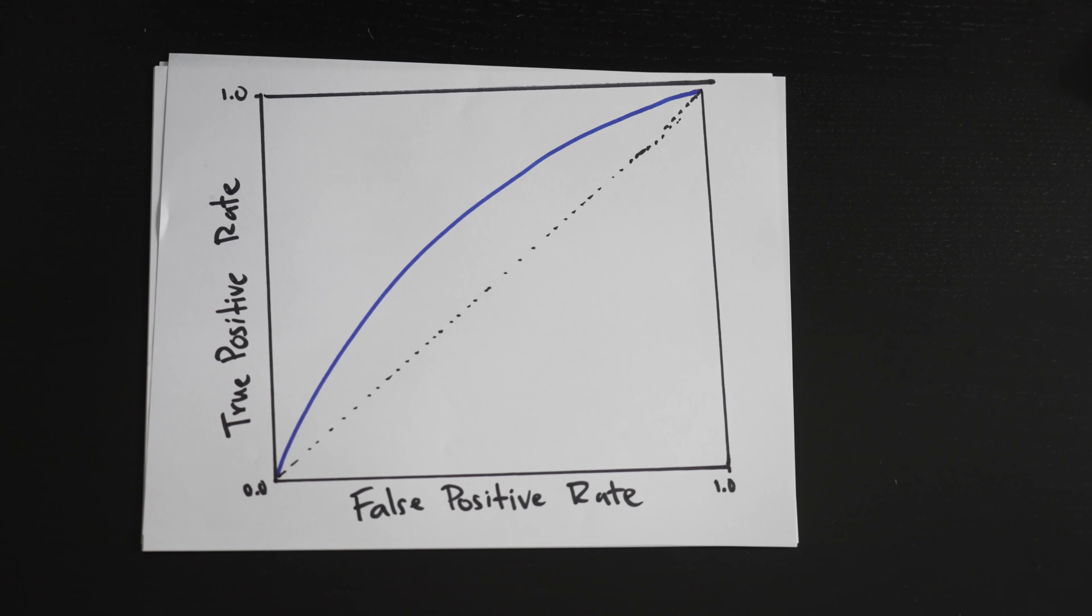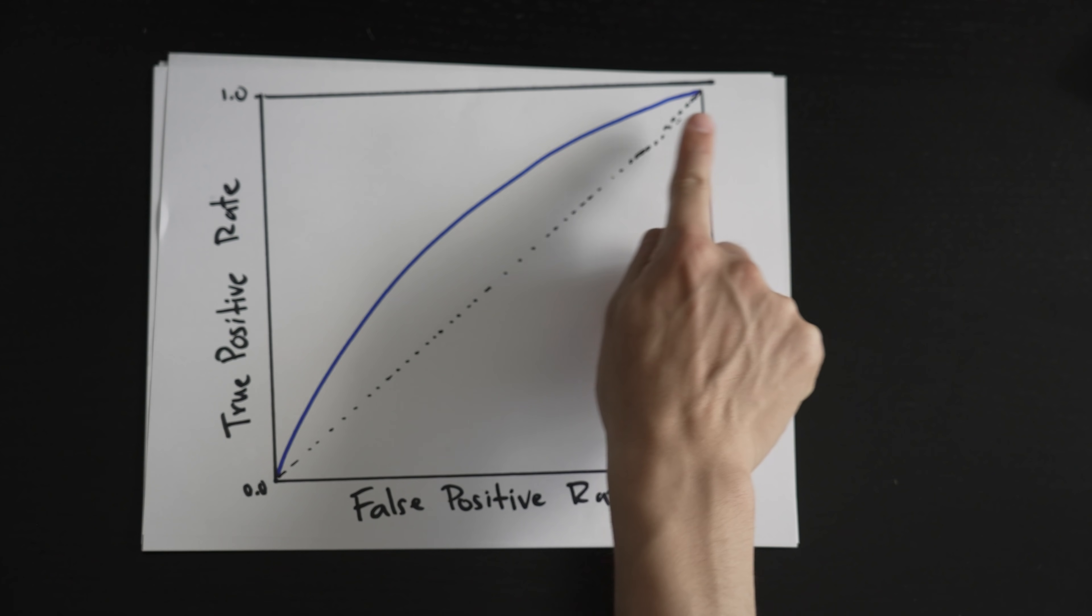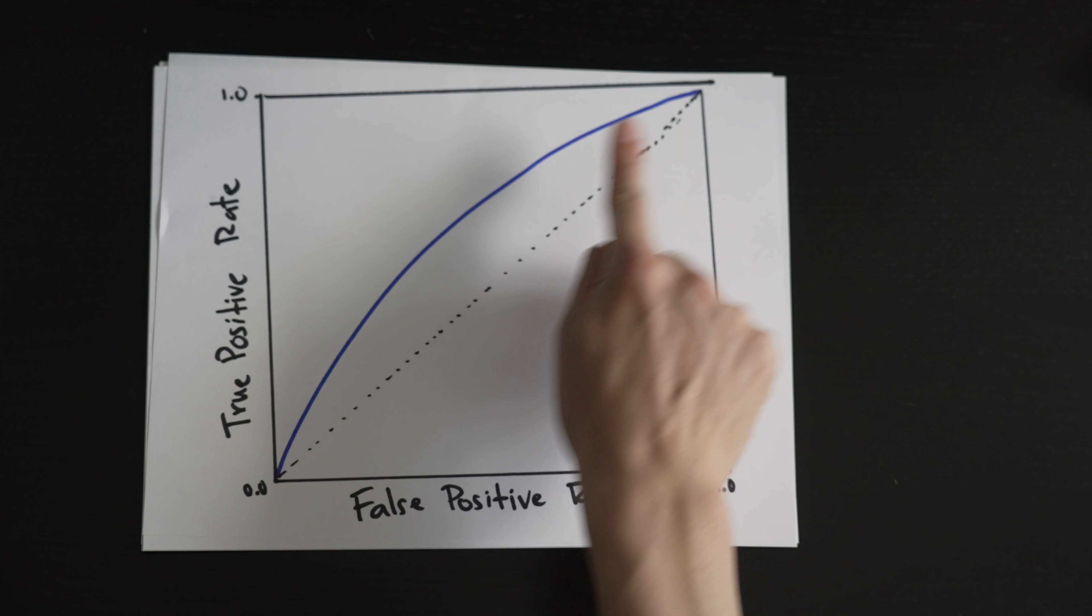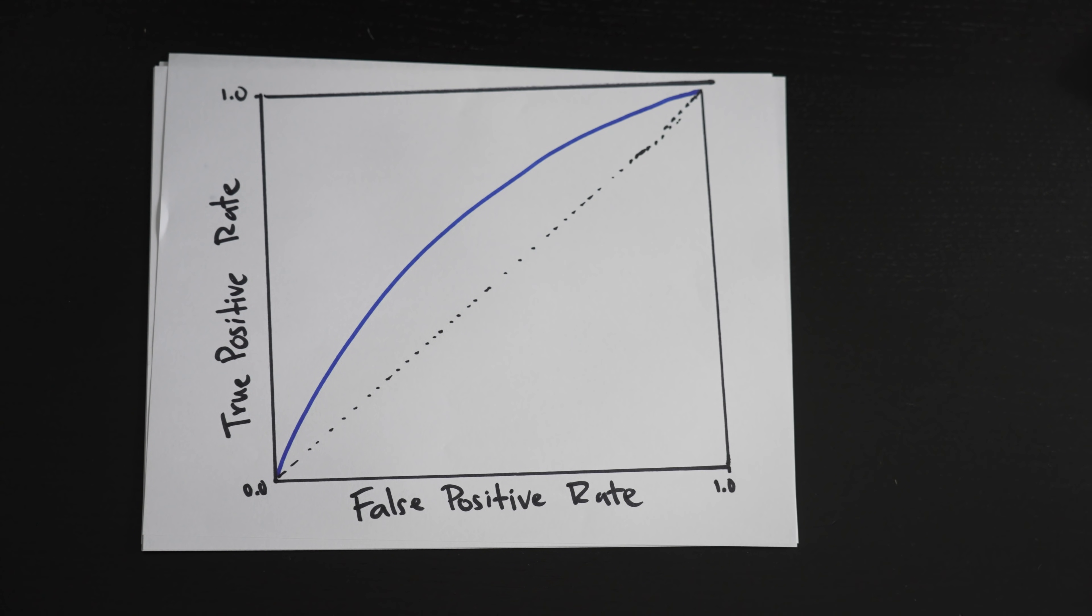Alright, back to the curve. What does this curve mean then? This curve actually represents how good your predictive model is, but why is it a curve?